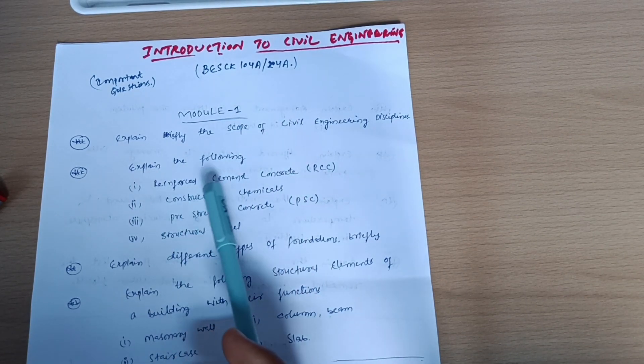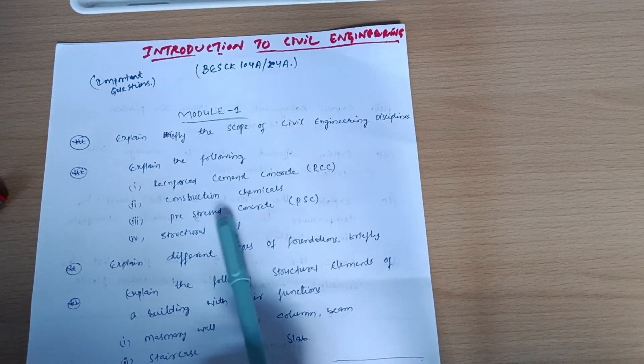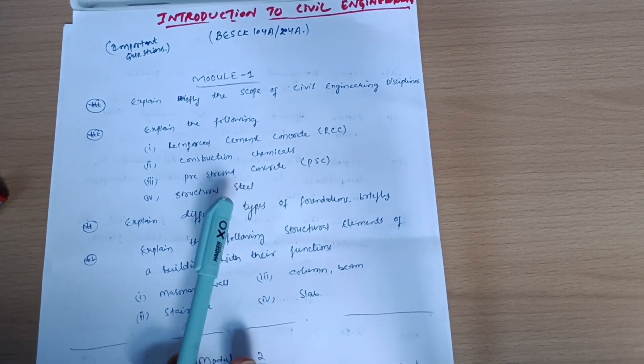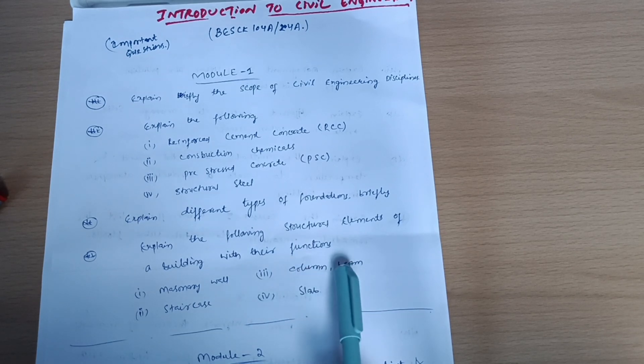Explain the following: reinforced cement concrete (RCC) and construction chemicals, pre-stressed concrete (PSC), structural steel, and explain different types of foundations briefly. Explain the following structural elements of a building with their functions like masonry wall, column, beam, staircase and slab.